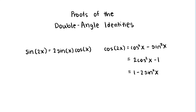Hey everyone! In this video I'd like to prove the double angle identities for sine and cosine. In a later video we'll talk about how to use and interpret these identities, but here I'd just like to focus on proving them. To prove these identities, we can use the angle sum identities for sine and cosine.